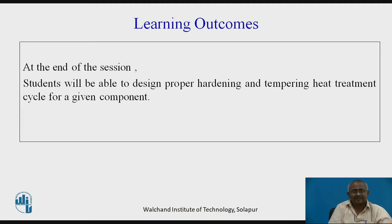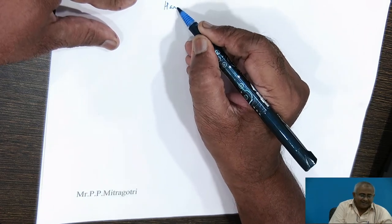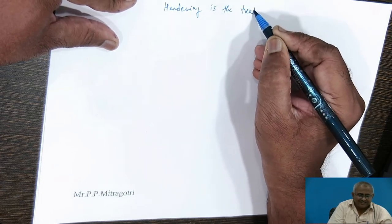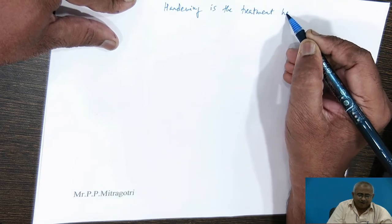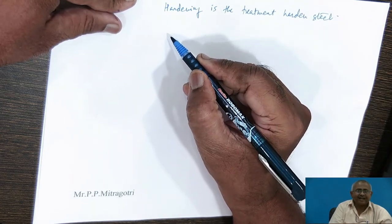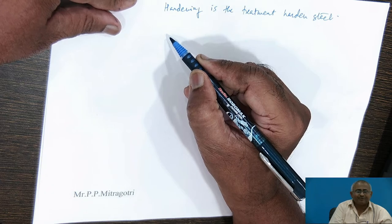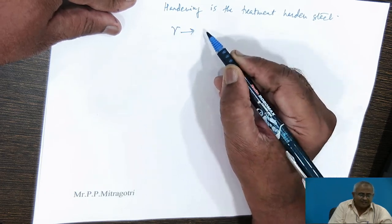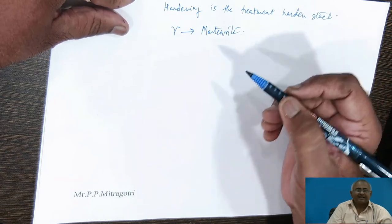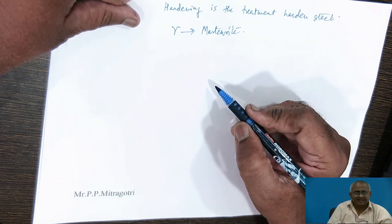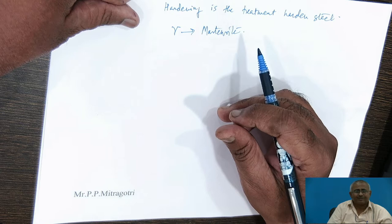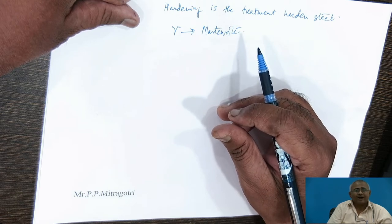Designing a hardening and tempering cycle to get an exact set of properties is a very difficult task faced by industrial personnel. Hardening, as the word itself indicates, is the treatment in which we harden the steel — that is, we transform the steel into a martensitic structure by heating it above the A3 temperature. First, we get austenite, and then austenite is transformed to martensite by cooling the steel at a rate greater than the critical cooling rate.